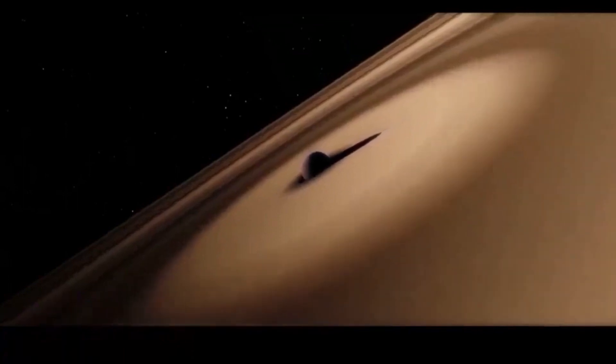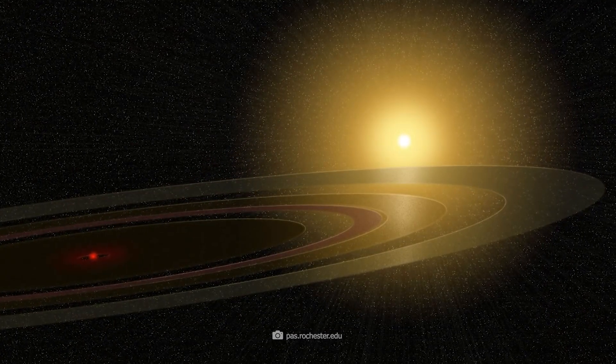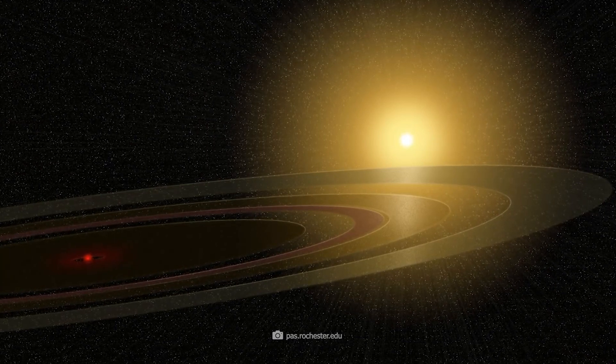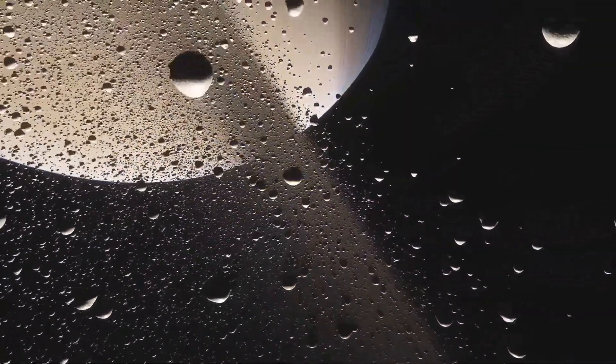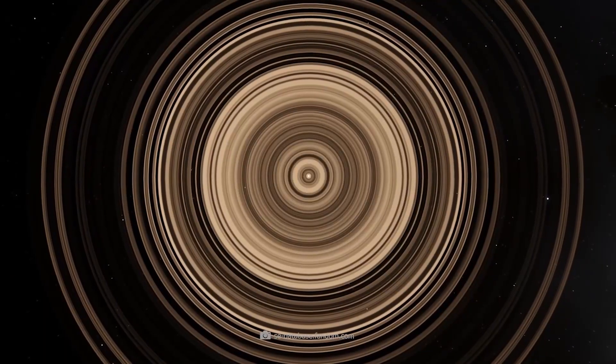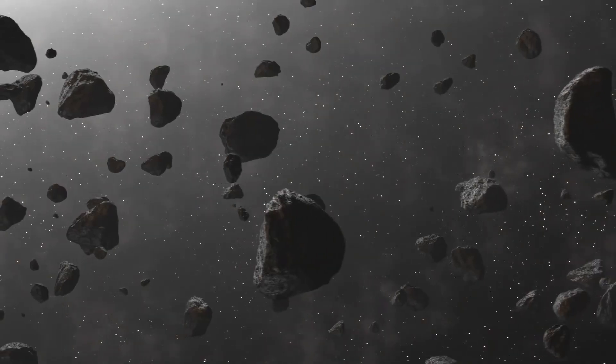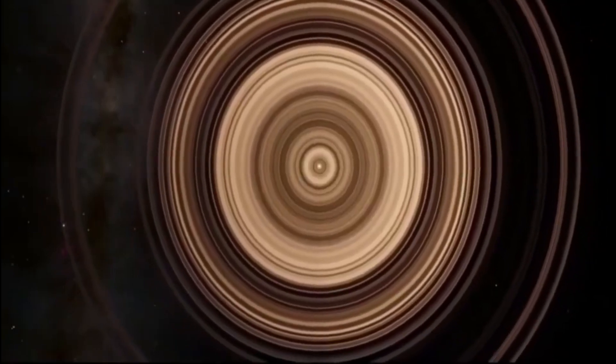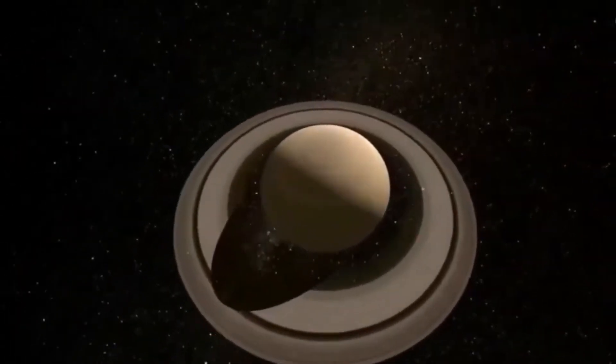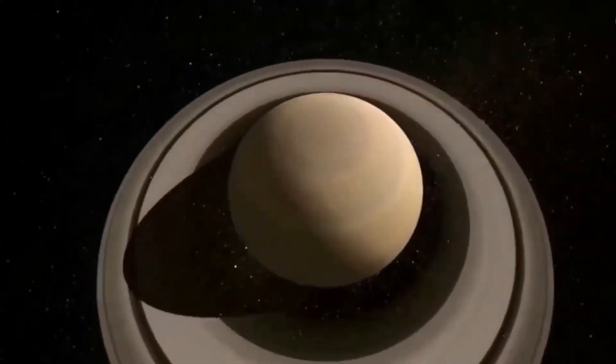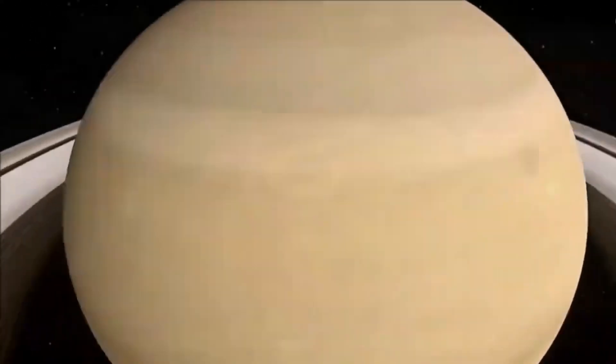Super Saturn is a fascinating exoplanet that orbits around the star J1407, which is located approximately 434 light-years away from Earth in the constellation Centaurus. This planet has been described as a Super Saturn due to its massive ring system, which is over 200 times larger than that of Saturn, our own solar system's gas giant.